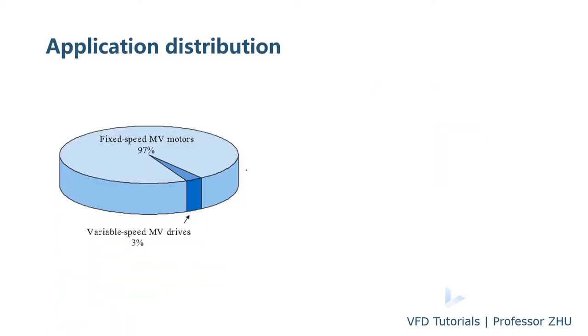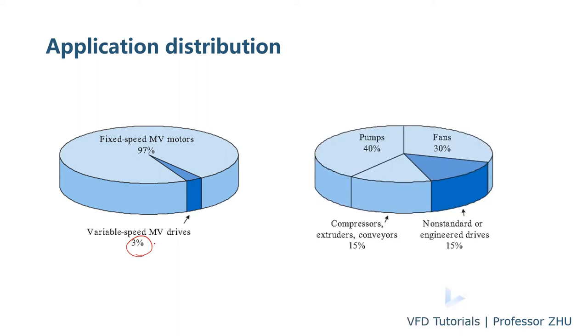And for the medium voltage motor, the majority is fixed speed. Only about 3% is driven by the variable speed drive. And for those driven by the VFD, majority of the load type is pump, fan, and compressor. And a very few, a small portion, the load is what we call the non-standard or engineered drive like a roller mill for the steel industry or some test bench.